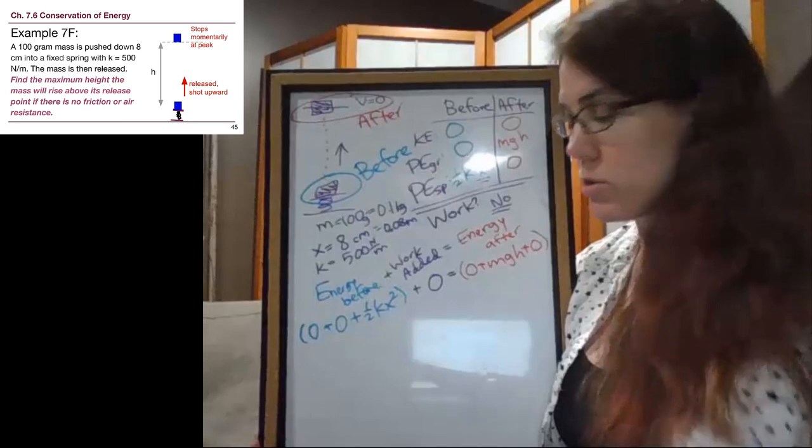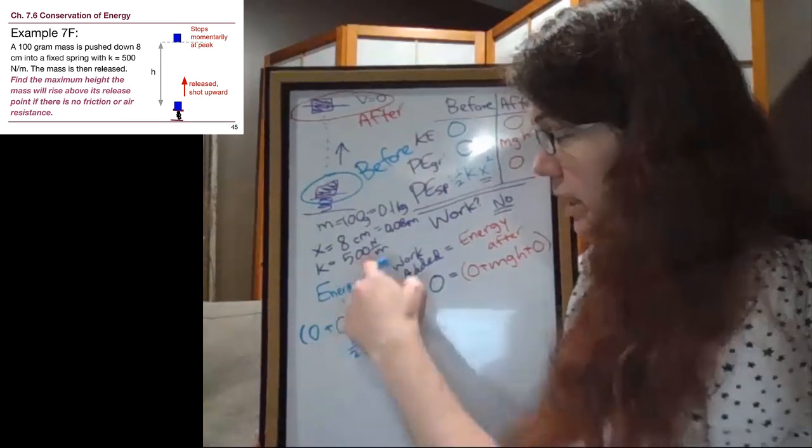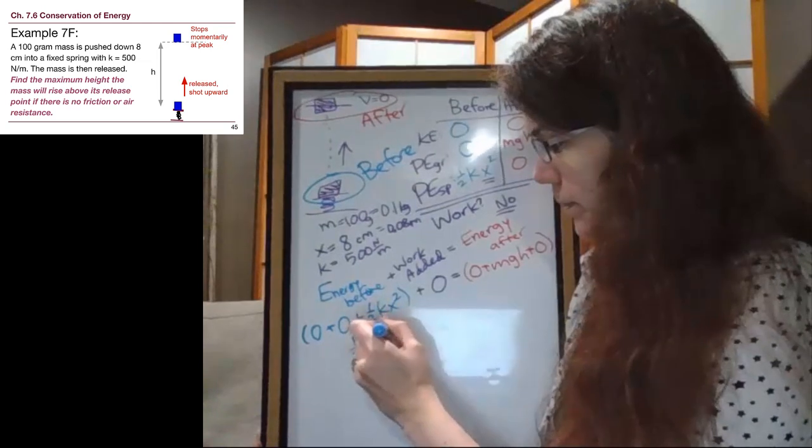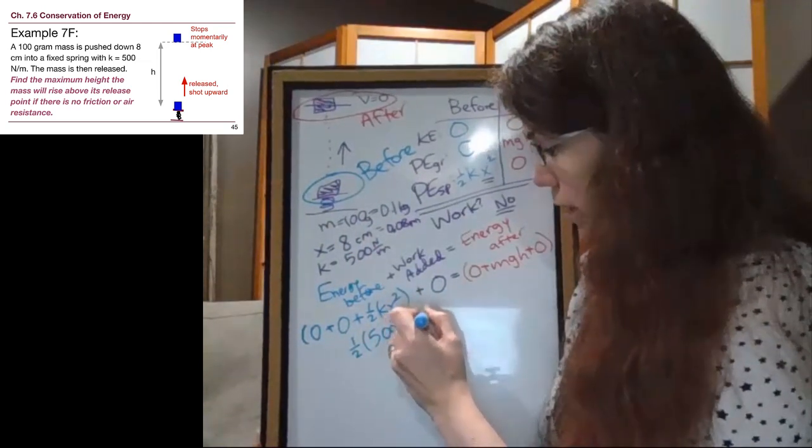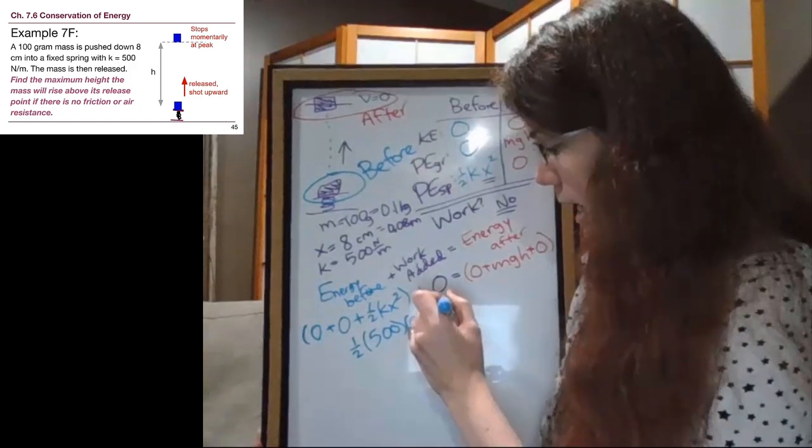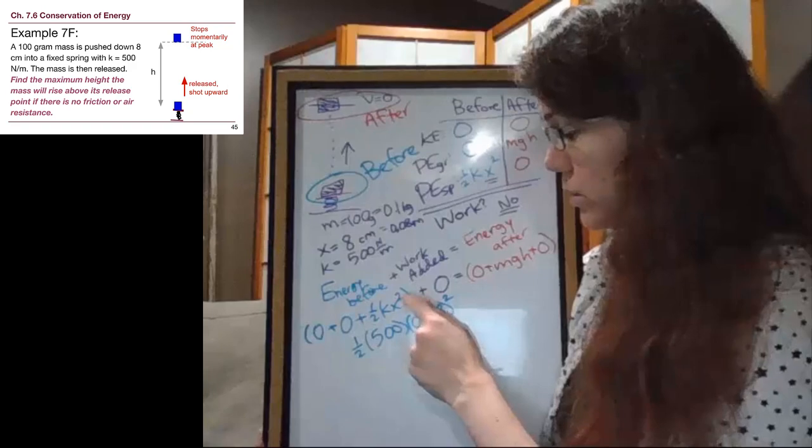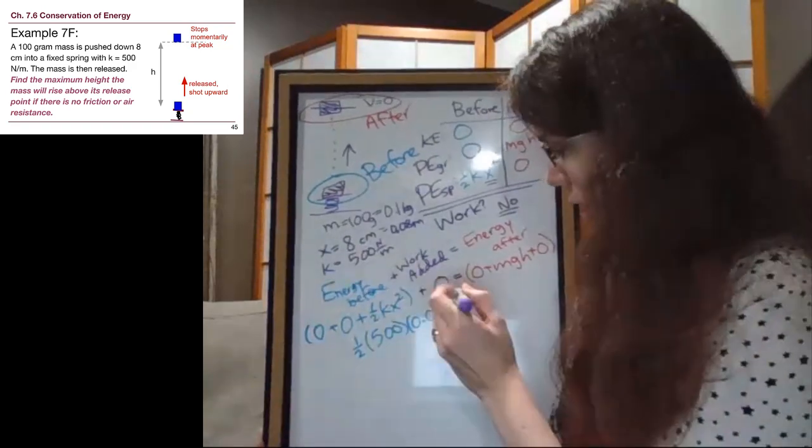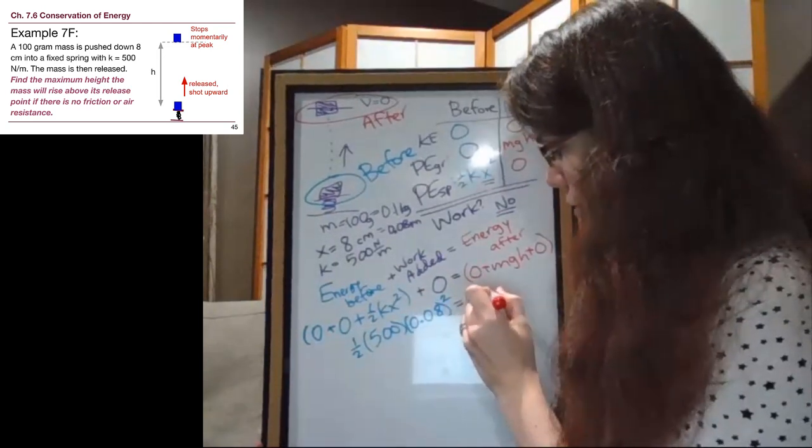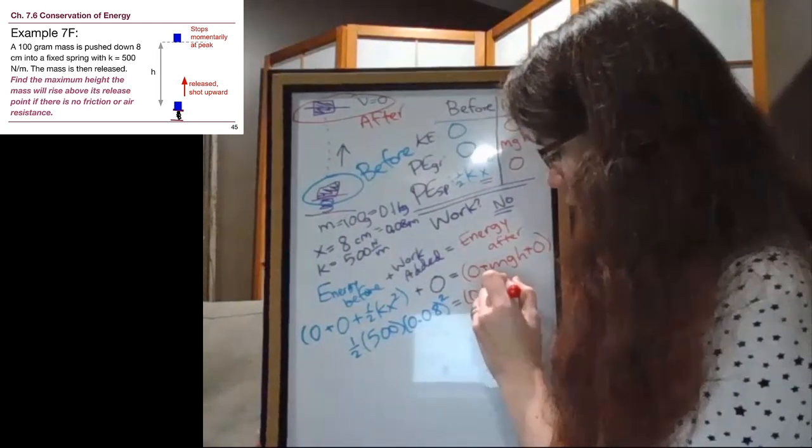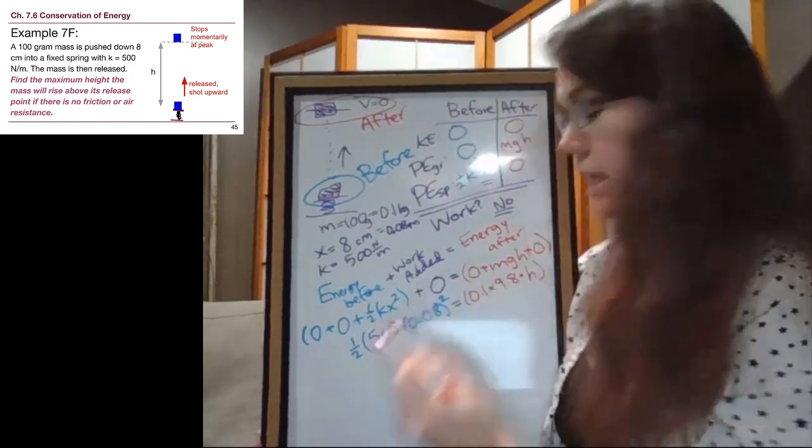So if we look, this one ends up being pretty simple looking. It is our first spring problem. So once we drop all the zeros and start to plug in numbers, on this side we have one-half, k here is 500, x we said was 0.08, and that x is squared. A lot of times students forget that squared, so don't forget to do that. And then on the right side here, we have mass, which is 0.1, times g, which is 9.8, times our unknown height, h.